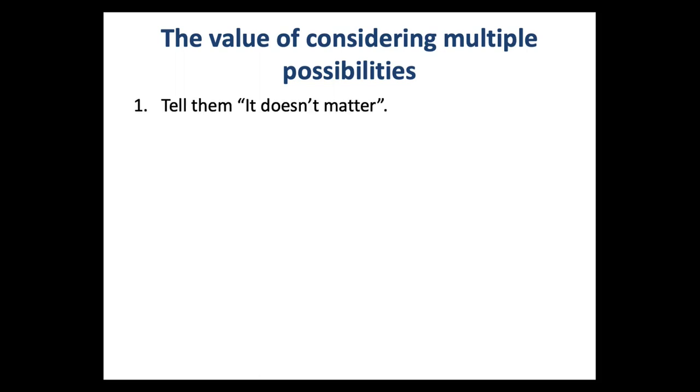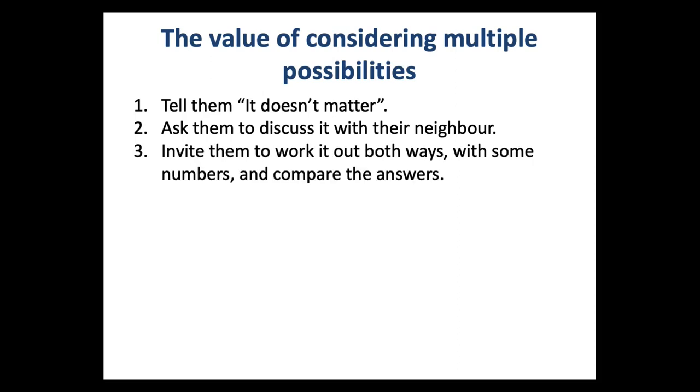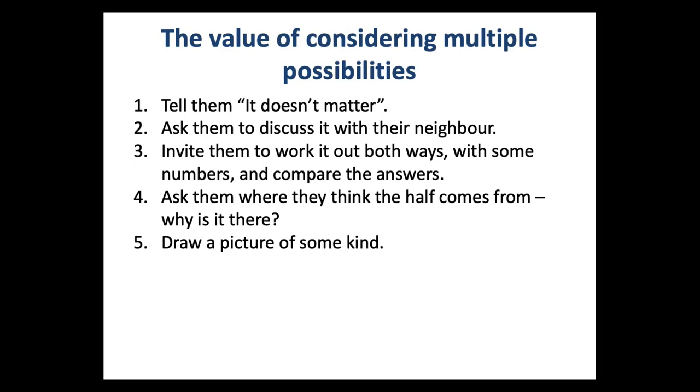I've given you a moment there to have a think of different possibilities. Here are some things that occur to me. You might say, well, don't worry about it, it doesn't matter. You can half the base, or you can half the whole thing, or you can half the height—you'll still get the same answer. Maybe just tell them. You could ask them, find out what their neighbour thinks about it. You could invite them to work it out both ways, maybe with some numbers, and see what happens if you try it both ways and compare the answers. You could ask them why we've got that half there in the first place—where does it come from? What's it doing there? That might tell us what it is that needs halving. You might want to draw some pictures.